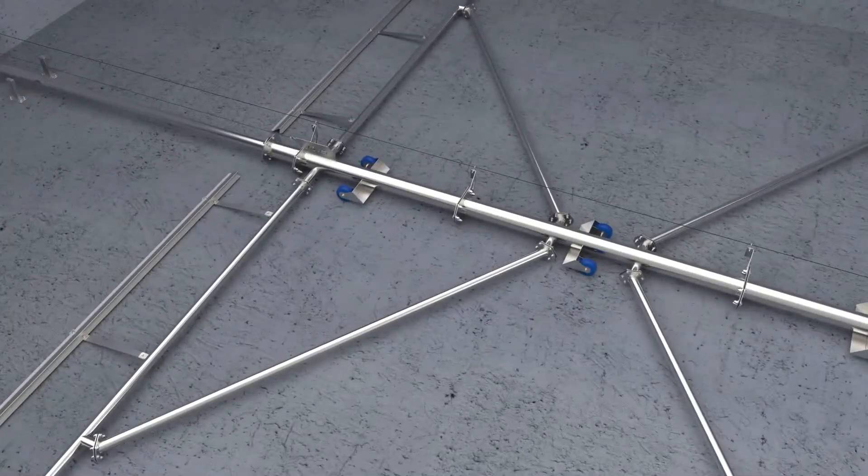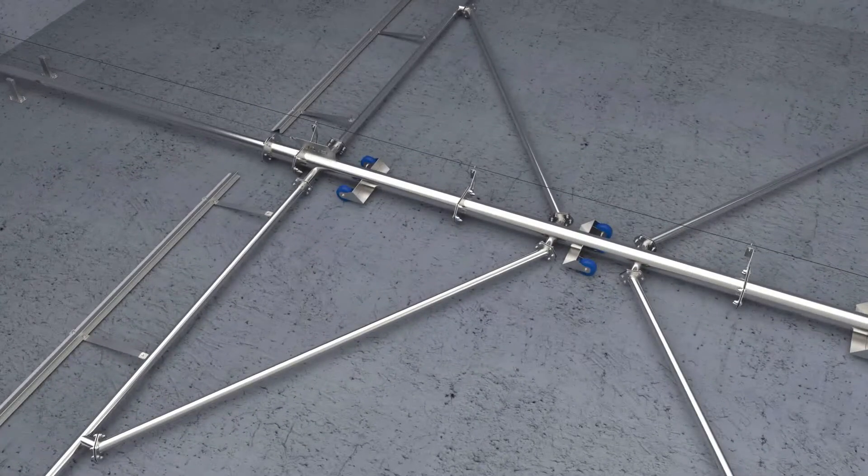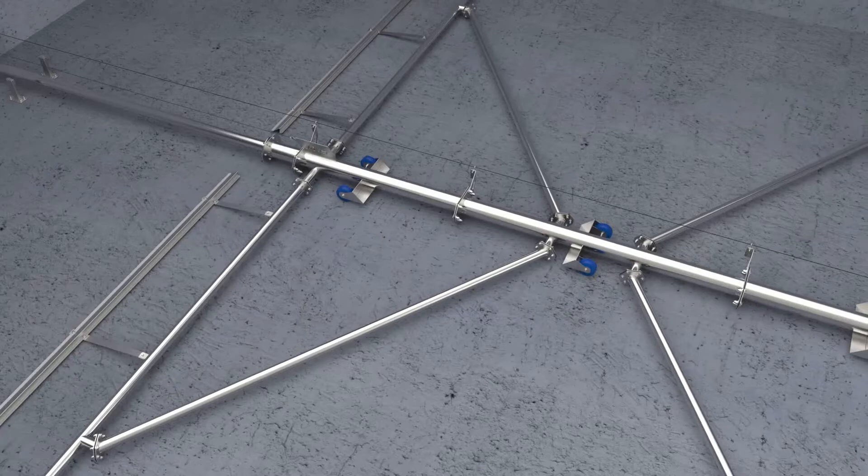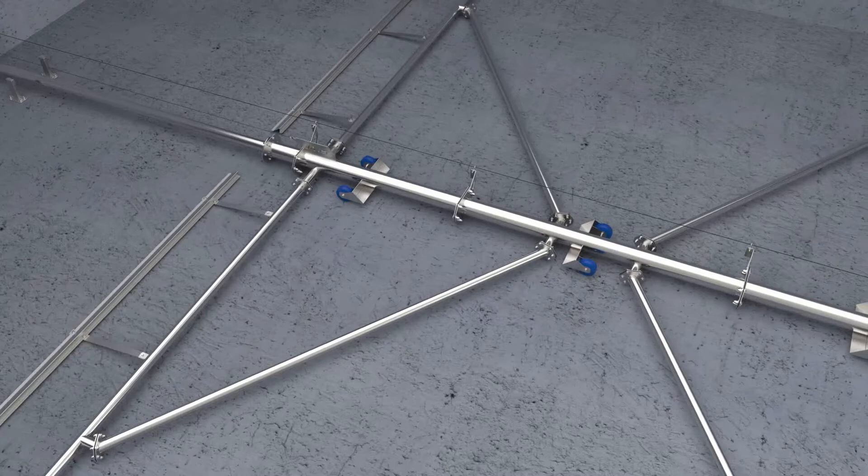JMS technology advancement patent-pending flow balancing diagonals minimize the effect of the differential pressure across the headers and balance the flow entering each orifice. Balanced flow through each orifice means better sludge removal across the entire basin.